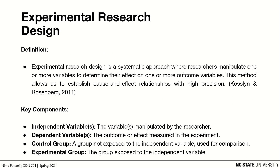Let's use a psychology example to make this clearer. Imagine researchers want to know how sleep affects our ability to think and solve problems. They decide to manipulate the amount of sleep people get — that's the independent variable. Some participants get eight hours of sleep, like a normal night's sleep, while others only get four hours. Next, they measure how well these people perform on a given cognitive task, like memory quizzes or puzzles. This performance is the dependent variable because it depends on how much sleep they got.